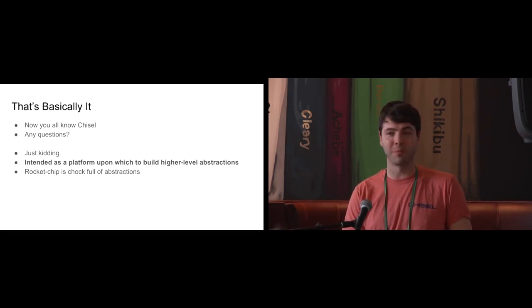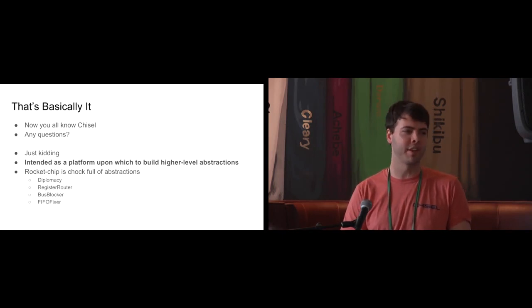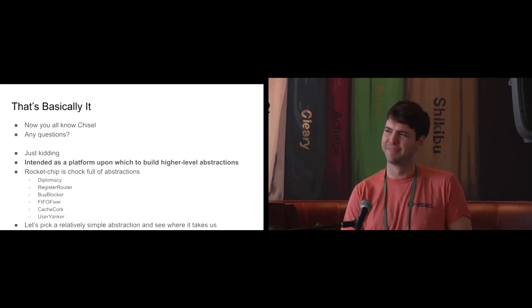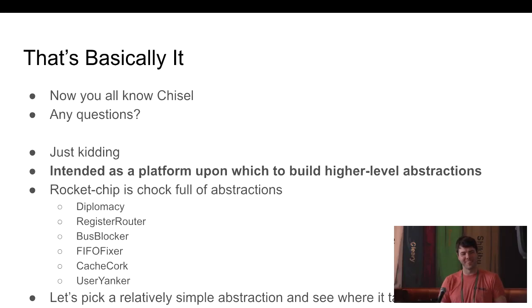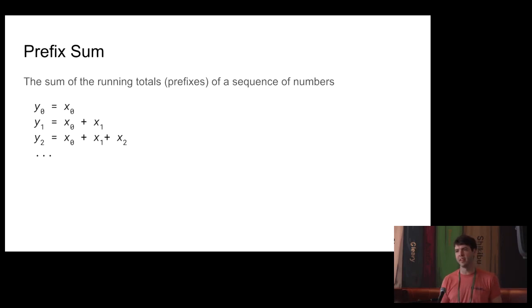But of course not. Like I said, it's intended as a platform upon which to build higher-level abstractions, so that's what I'm going to talk about here. As Jules kind of alluded to, Rocket Ship is chock full of them. We've got diplomacy, the register router, bus blocker, FIFO fixer, cache cork, user yanker. I didn't do any of these names, but some of those are my favorites. But let's pick a relatively simple abstraction and see where we can go with it. So prefix sum is something that many of us are familiar with. Does anyone know what time I started, by the way? Actually, right at 11? Okay.